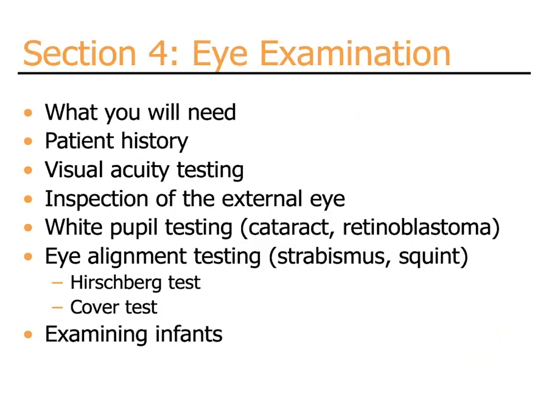Section four: the eye examination. In this section, we will talk about what you need to perform a screening eye examination, how to obtain a useful patient history, how to perform visual acuity testing, inspection of the external eye, white pupil testing — looking for cataract and retinoblastoma — and eye alignment testing, looking for strabismus or squint, using the two techniques of the Hirschberg test and cover test. We will also touch on examining infants and some of their particular needs.